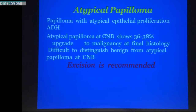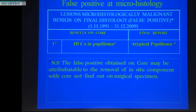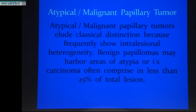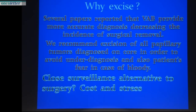The literature shows about 36–38% upgrade to malignancy at final histology. It is difficult to distinguish benign from atypical papilloma on core biopsy, and excision is recommended. In our experience, we had cases not of under-diagnosis but over-diagnosis — we found intraductal cancer in papilloma on core biopsy, but the final report was atypical papilloma. The pathologists' explanation was that the false positives on core may be attributable to removal of malignant components with the core, not found on surgical biopsy. Atypical malignant papillary tumors elude classical distinction because they frequently show intralesional heterogeneity.